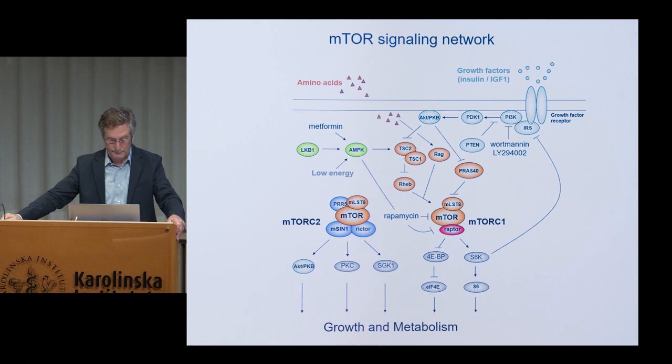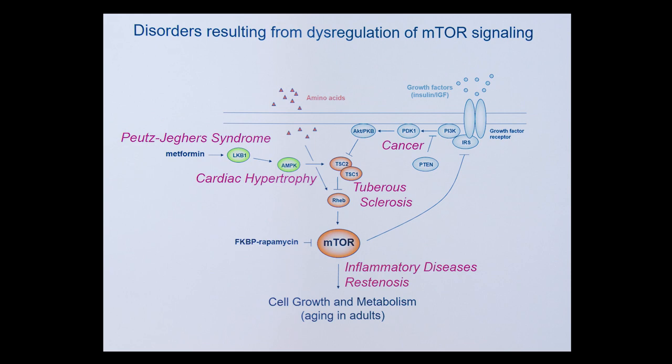Another fascinating aspect of the TOR signaling network is the large number of diseases to which it's been functionally linked. These diseases all have in common that they are due to inappropriate or ectopic cell growth — and these can be malignant forms of cell growth, such as cancer, or benign forms of cell growth, such as cardiac hypertrophy. But in all cases, cell growth.